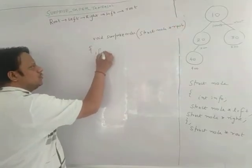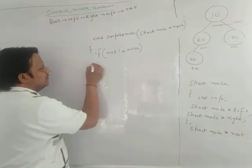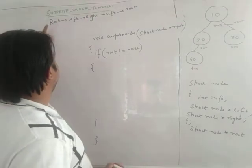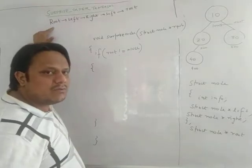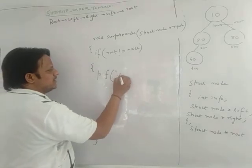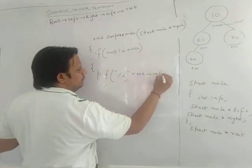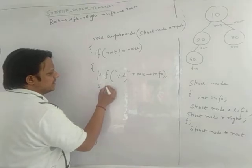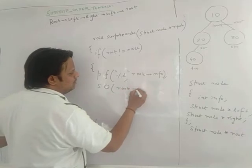So if root not equals to null, I am going to traverse the tree in this fashion. The first thing is root — root is a printf statement: printf(%d, root->info). Next is left, which is a recursive call: surprise_order(root->left). Then coming right: surprise_order(root->right). Again left: surprise_order(root->left).